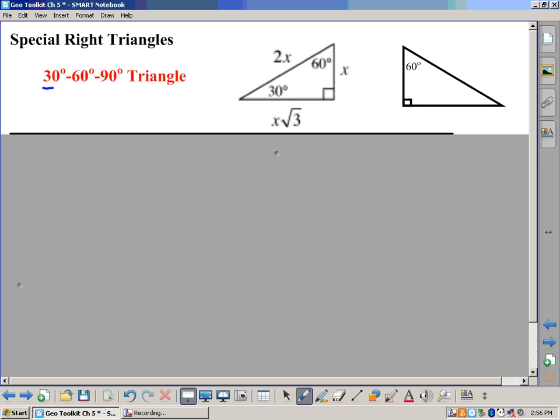One is what we call the 30-60-90 triangle, and it just so happens no matter what 30-60-90 triangle you're talking about, the side that's opposite the 30 degrees is what we call the short side. And whatever that is, in this case we'll call it x, the hypotenuse is always twice that.